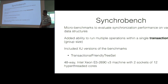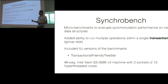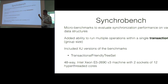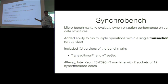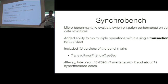The benchmarks are based on SynchroBench, a microbenchmark suite for evaluating performance of various synchronization techniques. We extended it with the ability to run transactions of various sizes, including XJ versions of the benchmarks. Results shown are based on the transaction-friendly tree set, run on a 48-way machine with two sockets of 12 hyper-threaded cores — 48 hardware threads in total.